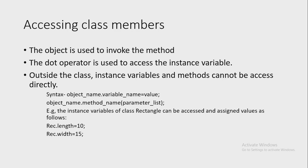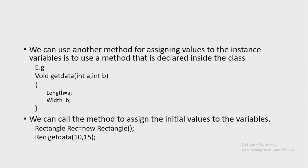For a better understanding, consider a class Rectangle. The instance variables of that class can be accessed and assigned values as follows. Suppose rec is the object of class Rectangle. Using the syntax objectName.variableName = value: rec.length = 10, and similarly, rec.width = 15, where rec is the object, width is the variable name, and 15 is the value.